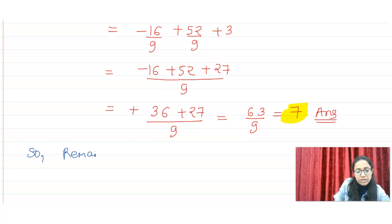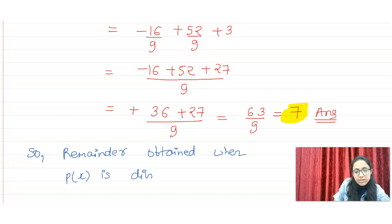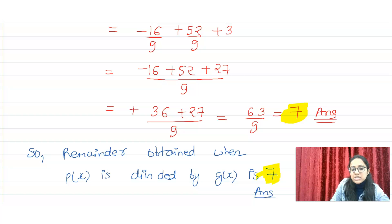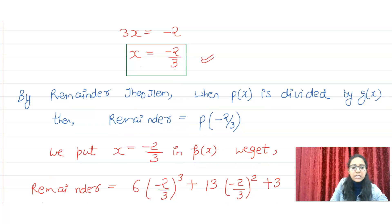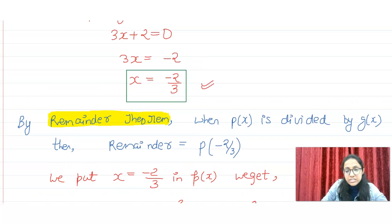This is our complete answer. What we have seen is the remainder theorem applied to this question, and the remainder we got is 7. It is not necessary to use long division — we can use a division method too, but the remainder theorem is the easiest method.